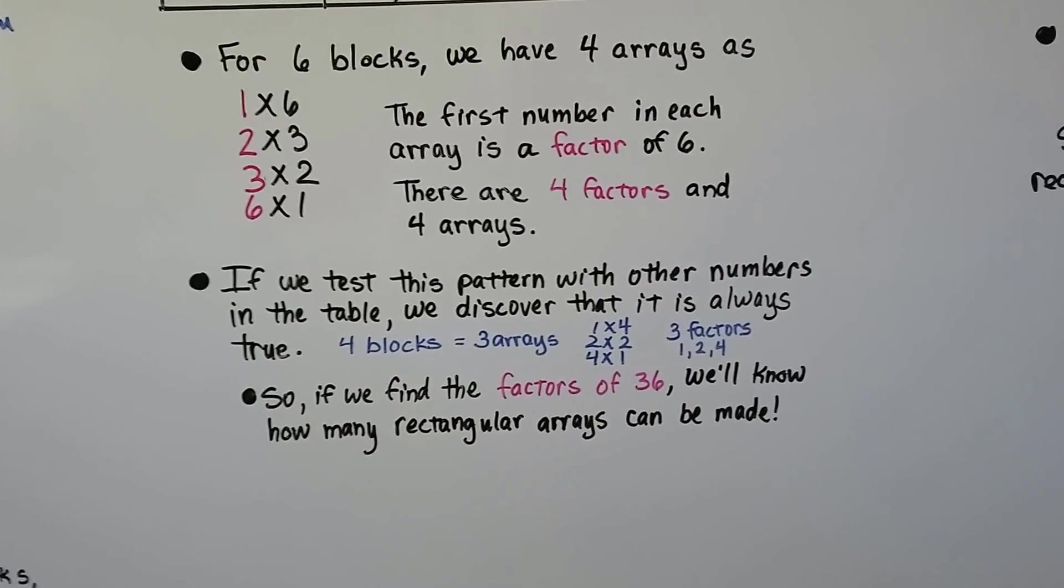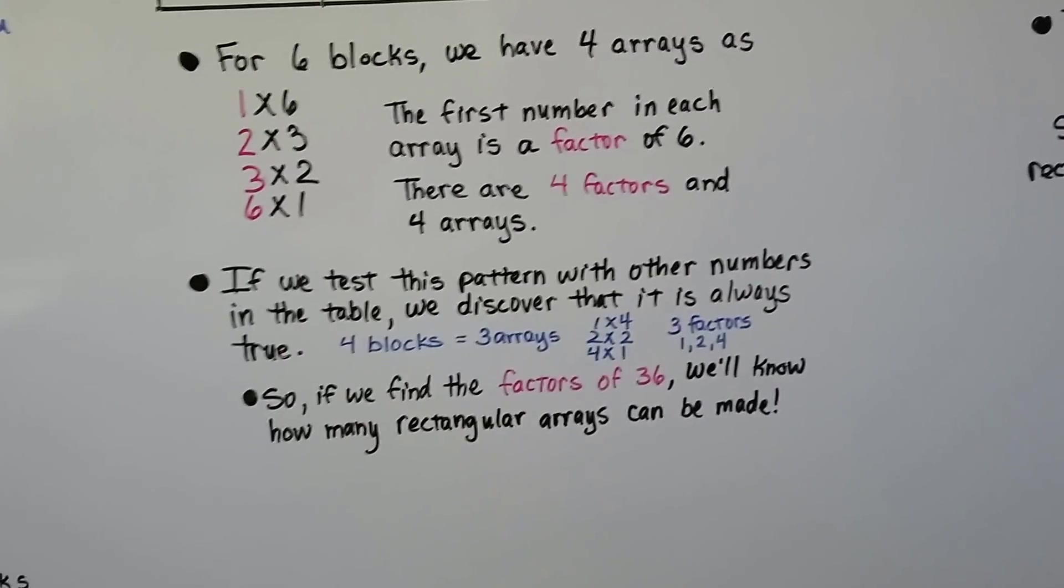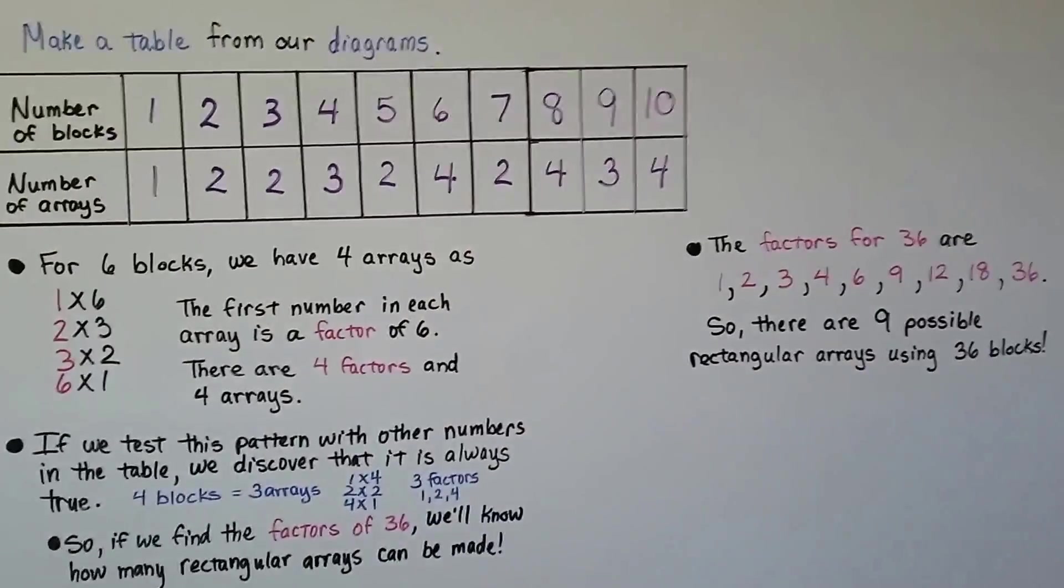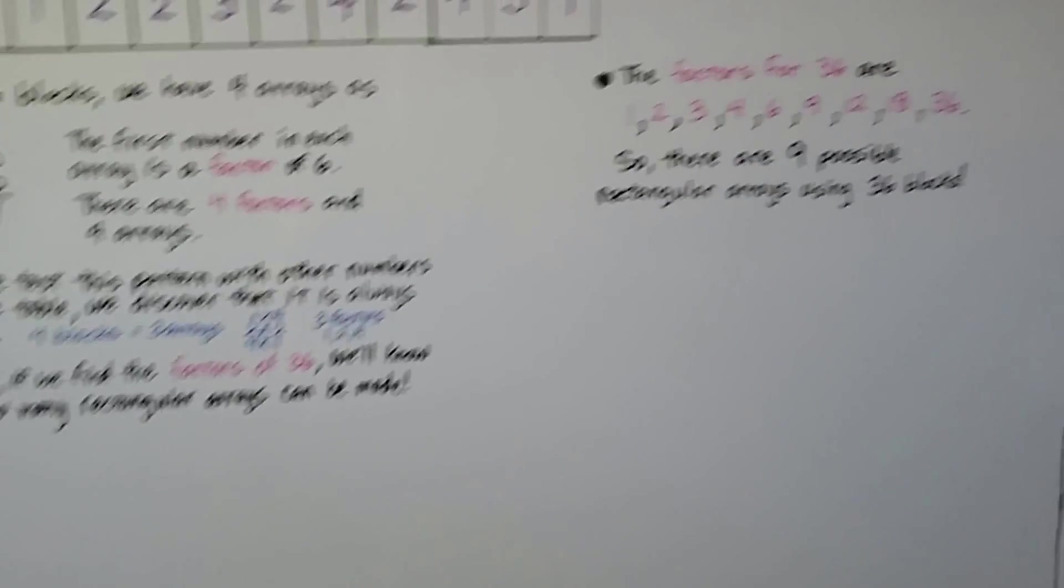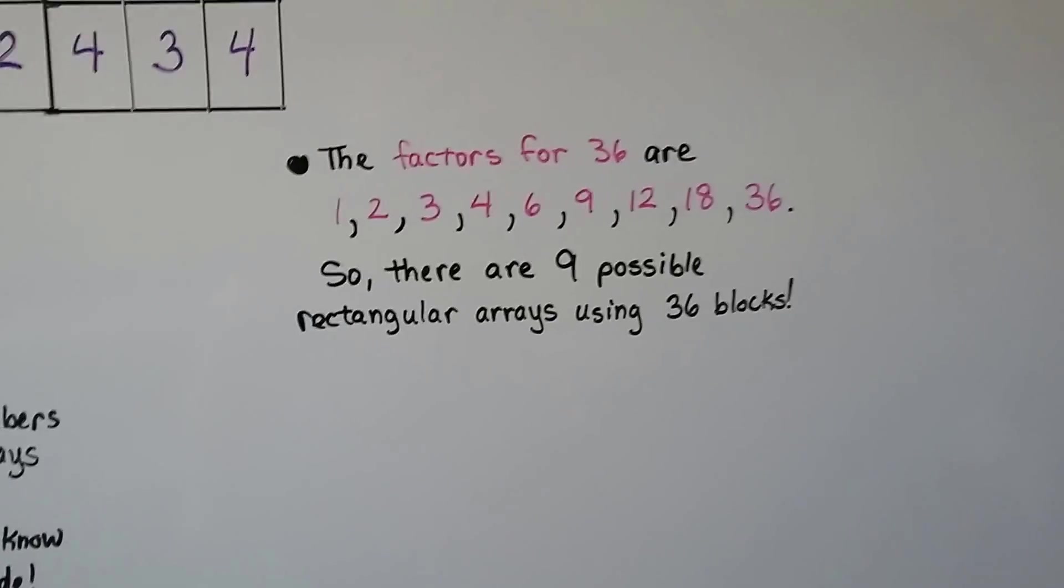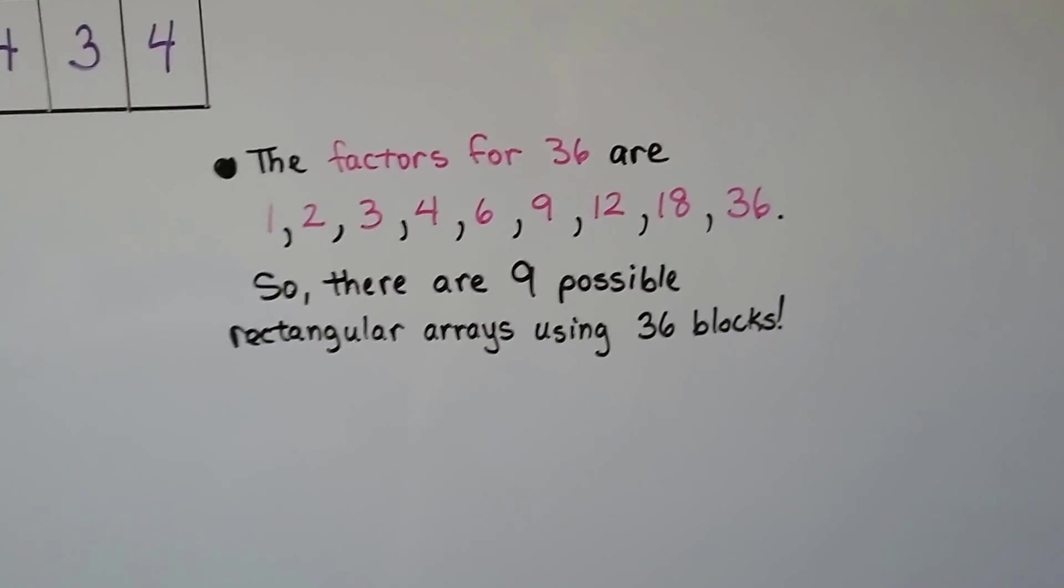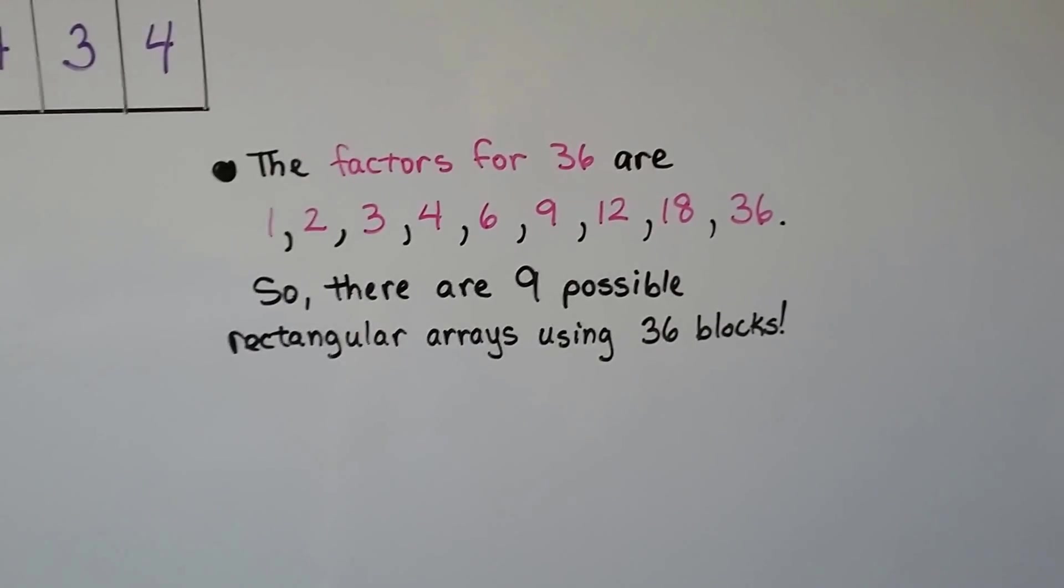So if we find the factors of 36, we know how many rectangular arrays we can make, without having to make the table go all the way to 36 and without having to draw all those diagrams. So the factors for 36 are 1, 2, 3, 4, 6, 9, 12, 18, and 36.